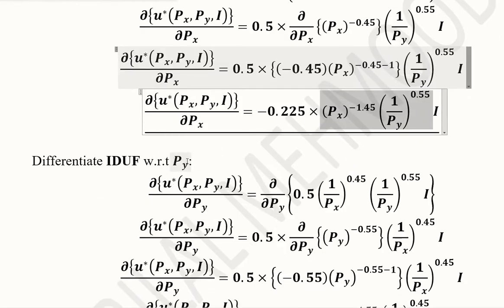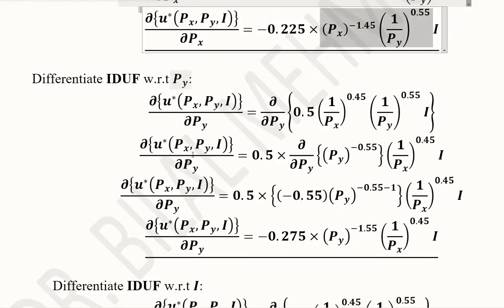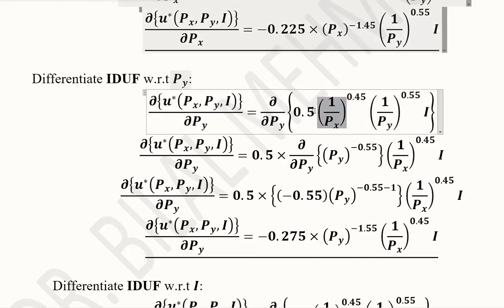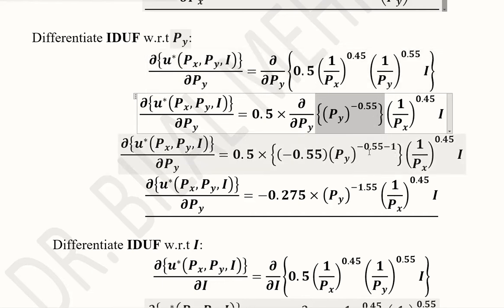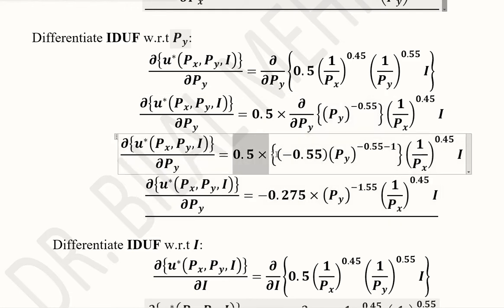Now we compute the partial differentiation of the indirect utility function with respect to Py. The other terms — including I — are treated as constants, and only the term containing Py is differentiated. After reciprocalizing the term with Py and applying the power rule, we multiply the resulting terms to obtain the derivative with respect to Py. We now have the partial derivatives with respect to both Px and Py.